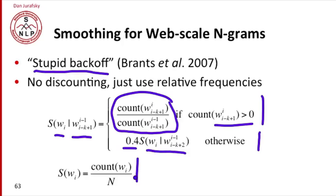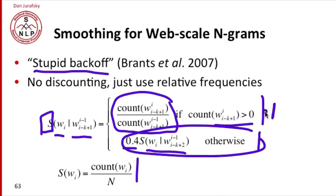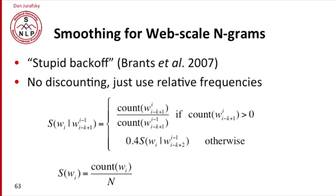We call this S instead of P because stupid backoff doesn't produce probabilities. Because to produce probabilities, we would have to actually use various clever kinds of weighting. A backoff algorithm has to discount this probability to leave some mass left over to use the bigram probabilities. Otherwise, we are going to end up with numbers that are greater than one, and we won't have probabilities. But so stupid backoff produces something like scores rather than probabilities. But it turns out that this works quite well.